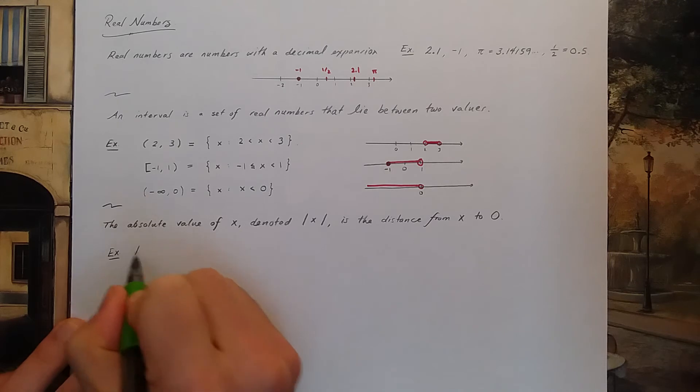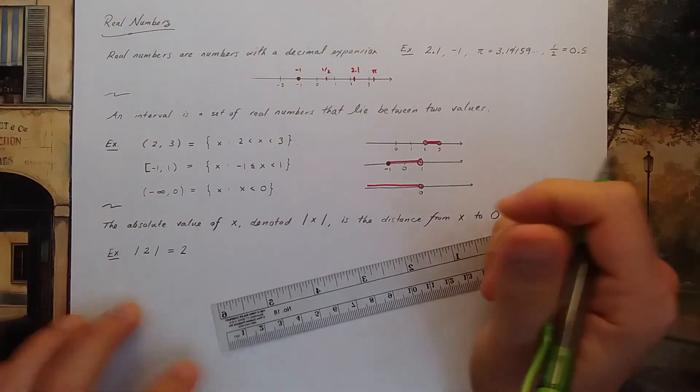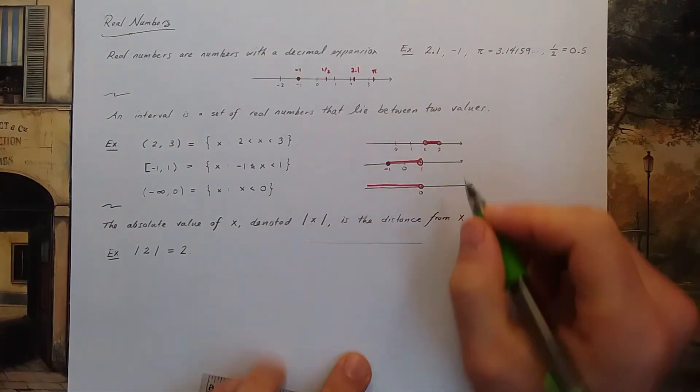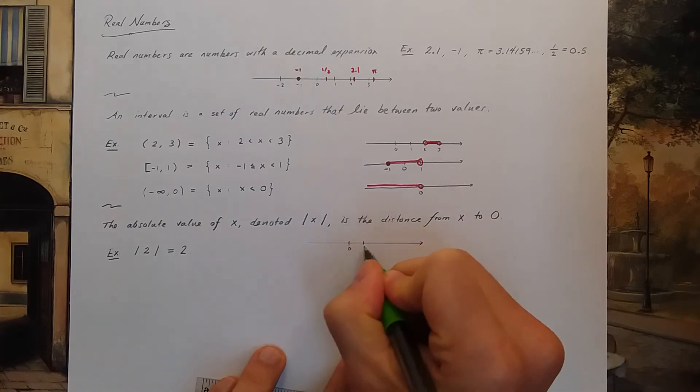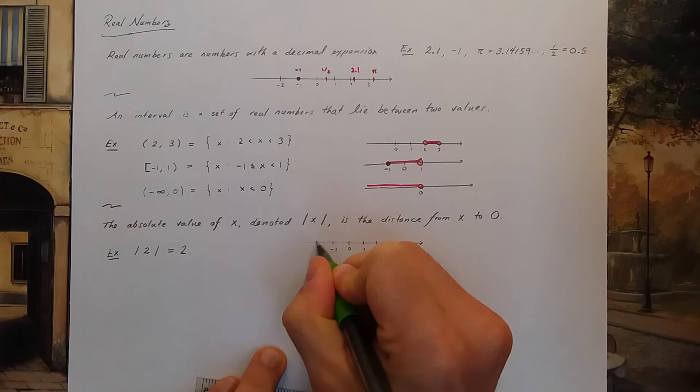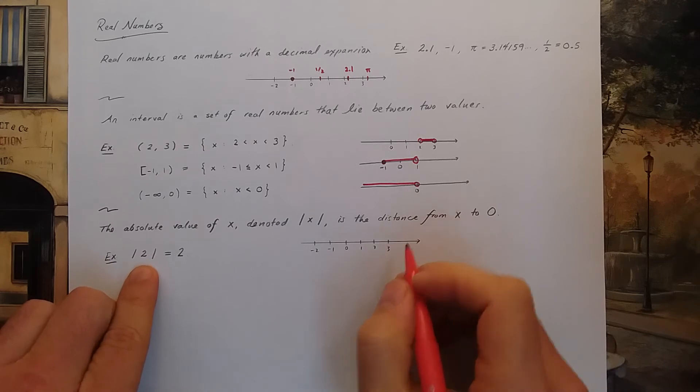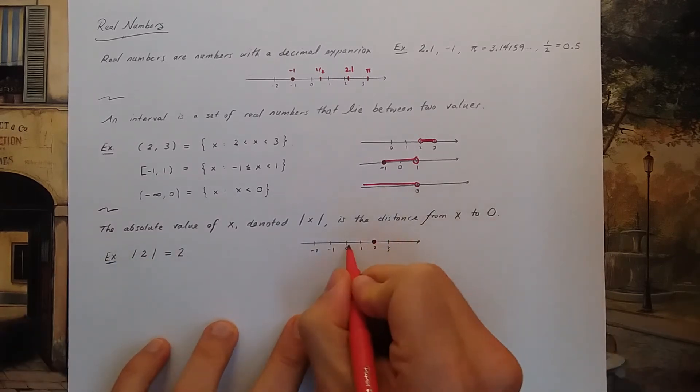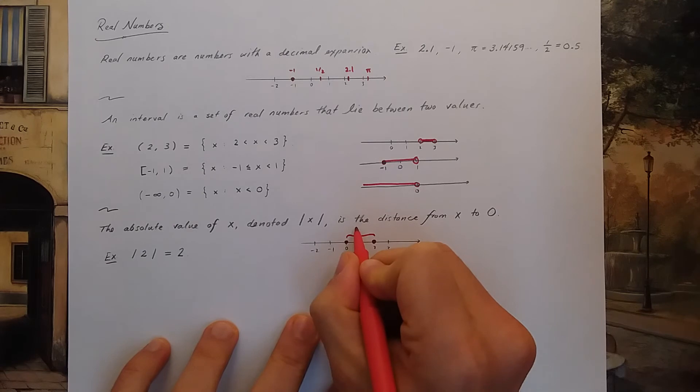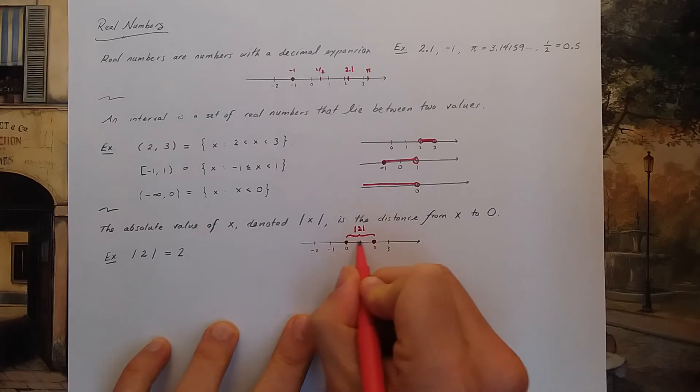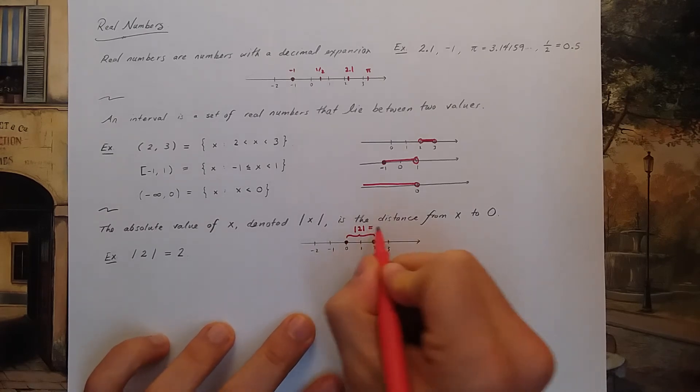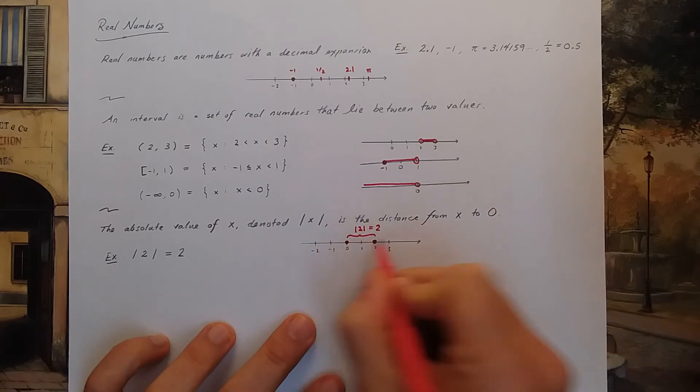Let's see an example. The absolute value of 2 is 2. Why? Let's draw our number line. We have 0, 1, 2, there's negative 1, negative 2, 3. 2 on the number line is here. 0 on the number line is here. This distance is the absolute value of 2. This distance going from 0 to 2 is distance 2. That's why the absolute value of 2 is 2. They're 2 steps away from one another.